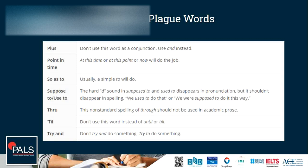'Through' — make sure we're talking about the spelling. 'Till' — just use the word 'until,' with a double L. 'Try and' — this is the example we used earlier: don't say 'try and do something,' say 'try to do something.'